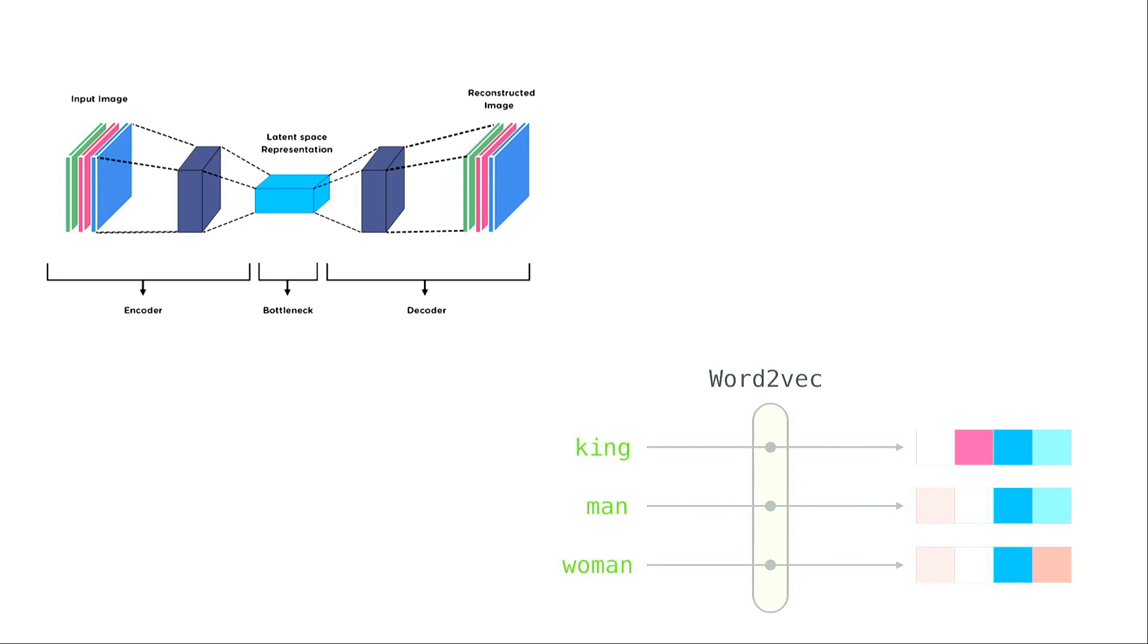This can also be considered to be similar in spirit to matrix factorization, but the goal here is to encode the context around the word rather than the word itself.